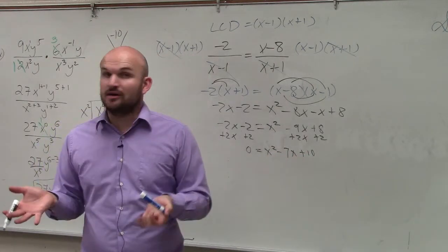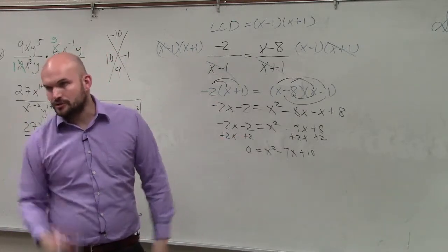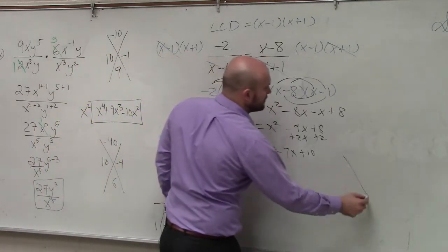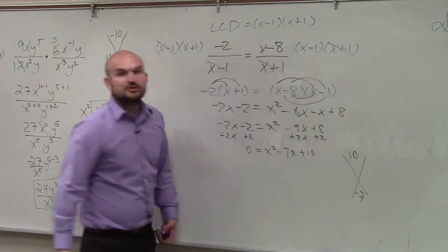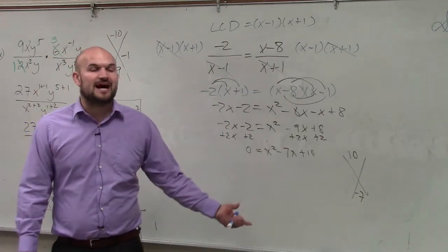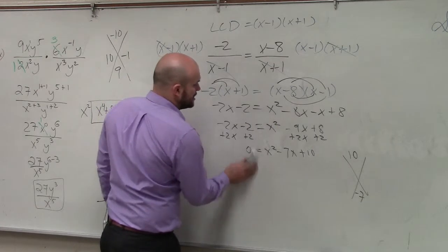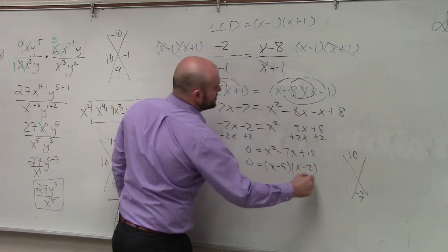So now how do I solve this? I can't solve this like I did before. I've got to use factoring. Or you could use the quadratic formula. However, if you're really good at factoring, the quadratic formula is a lot of time to spend solving this problem. All we need to do is determine what two numbers multiply to give you positive 10 but add to give you negative 7. So 0 equals x minus 5 times x minus 2.